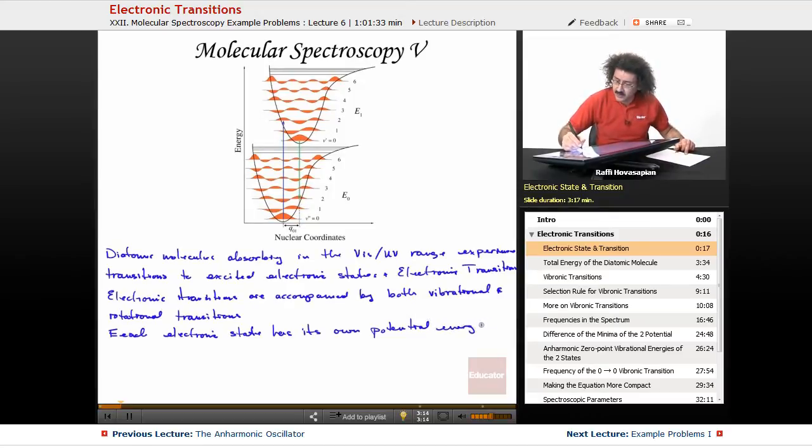So each electronic state has its own potential energy curve. And they don't necessarily need to look alike. One is not a copy of the other. It might look like it here, but they're not.